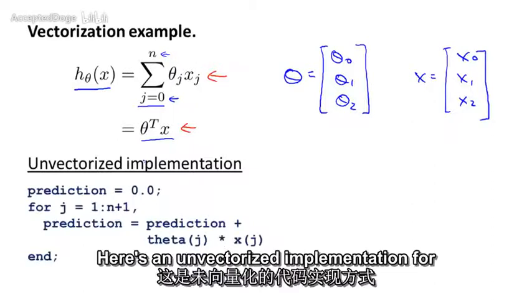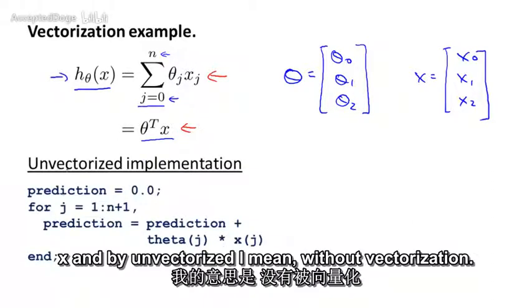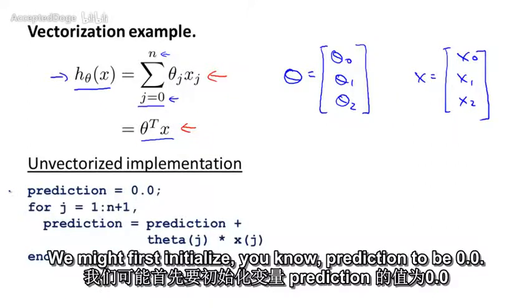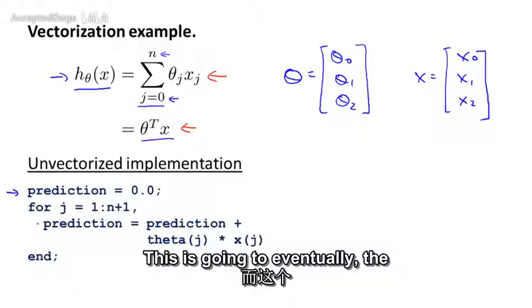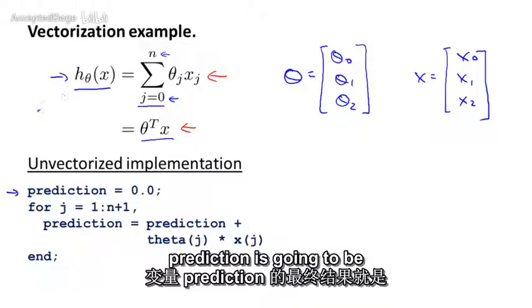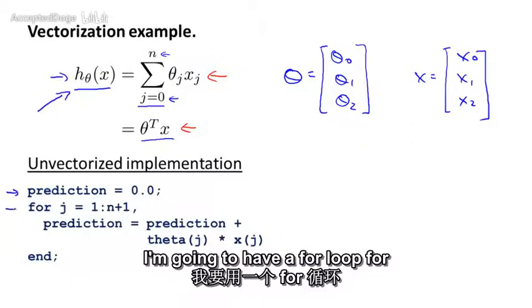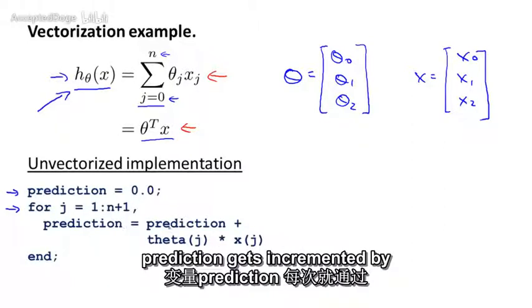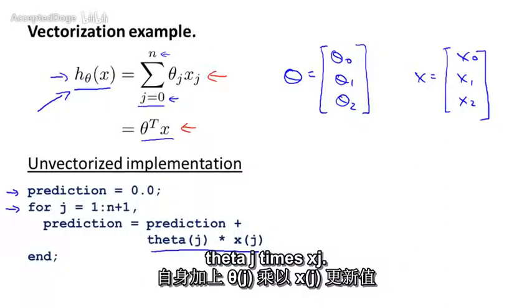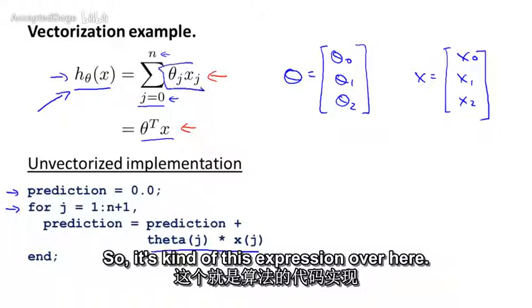Here's an unvectorized implementation for how to compute h of x. And by unvectorized, I mean without vectorization. We might first initialize prediction to be 0.0. This is going to eventually be h of x. And then I'm going to have a for loop for j equals 1 through n plus 1. Prediction gets incremented by theta j times xj. So it's this expression over here.